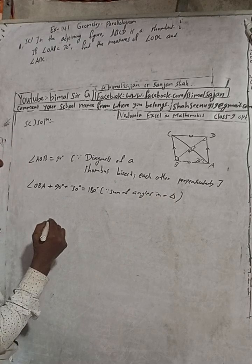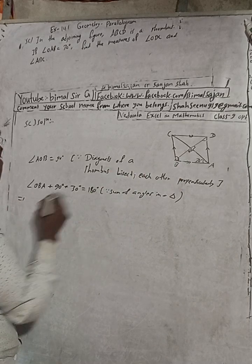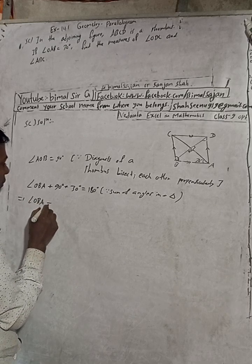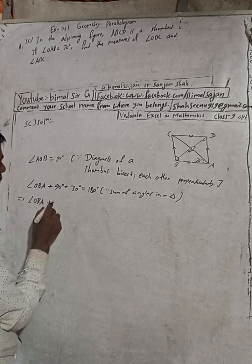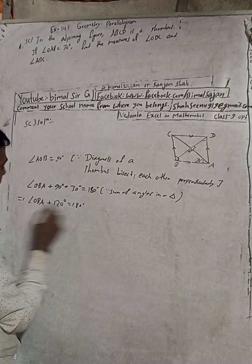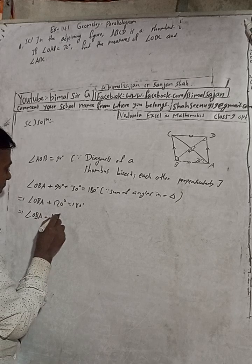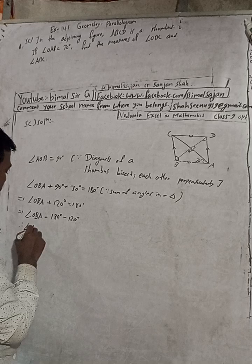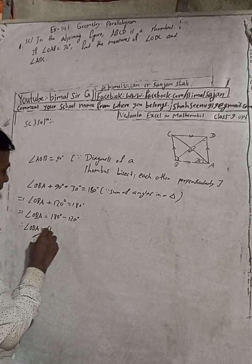So now this implies: angle OBA — let us find this angle. 90 plus 30 equals 120 degrees, which equals 180 degrees. Therefore angle OBA is equal to 180 minus 120 degrees, that is 60 degrees.